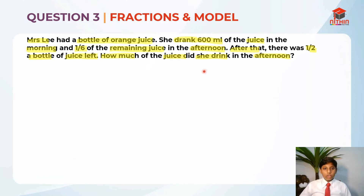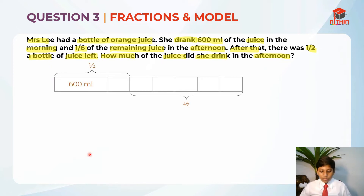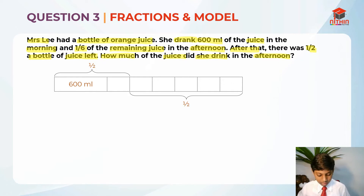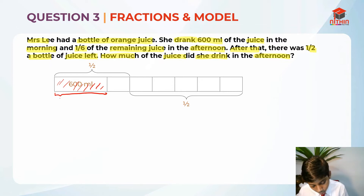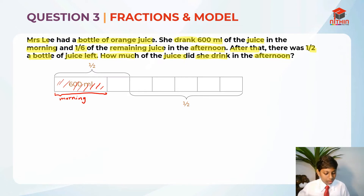Now that we have read the question, let me draw the model. So this is the model over here. Let's understand what this model is telling us. She drank 600ml of the juice in the morning — she drank this in the morning. And then she drank 1/6 of the remaining.